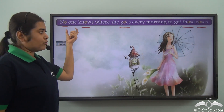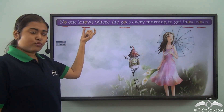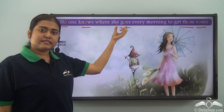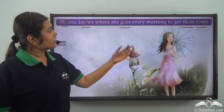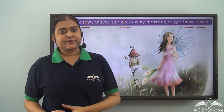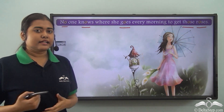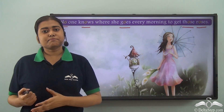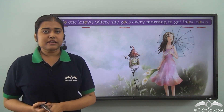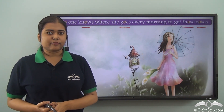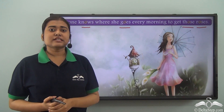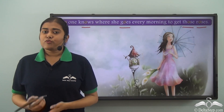O from 'no', O from 'knows', 'go' also has that sound O, then you have O in 'those' as well as 'roses'. Now, this is a special feature which has a special name in English language. It is called assonance.